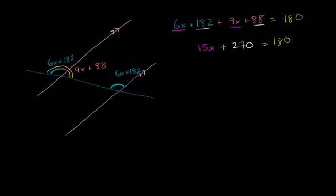Subtracting 270 from both sides, we get 15x equals negative 90. Now divide both sides by 15. We get x equals—let's see, 6 times 15 is 90—so x equals negative 6.